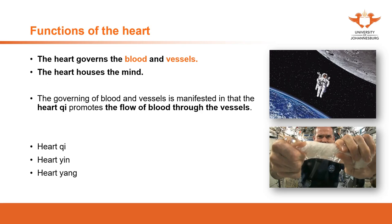The heart has two functions: first, it governs the blood and vessels; second, it houses the mind. The governing of blood and vessels is manifested in that the heart qi promotes the flow of blood through the vessels. The heart governs the blood, meaning the heart is in charge of promoting the movement of blood. This results in blood being circulated all over the body to provide nutrition throughout.